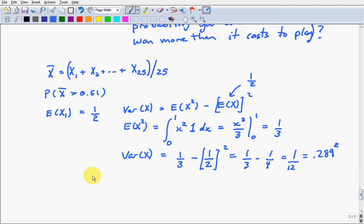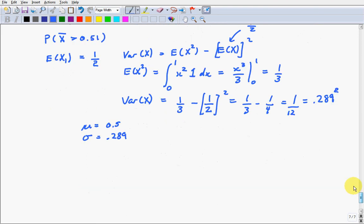So, to use this in the central limit theorem, we know that mu equals 0.5 and sigma equals 0.289. And so the central limit theorem tells us how x is going to behave. It says that x bar will be normal with expected value mu, and variance 0.289 squared over n. And here n equals 25. I'm going to play 25 games.